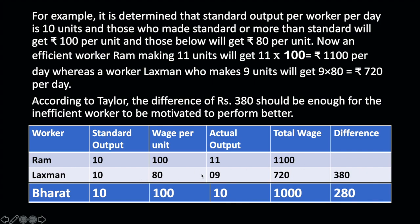Lakshman could not produce the standard output of 10 units; he produced 9 units. So he will get the lesser rate of ₹80 per unit, giving him ₹720. And Bharat achieved exactly the standard output — actual output is 10, standard is also 10 — so he will get ₹1,000 wages in a day.